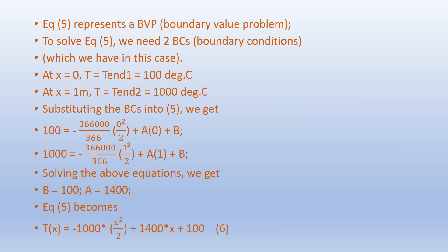This equation represents a boundary value problem. To solve it we need two boundary conditions. At x = 0, T = T₁ = 100°C, and at x = 1 meter, T = T₂ = 1000°C. Substituting the boundary conditions and solving for A and B, the solution becomes: T(x) = -1000·(x²/2) + 1400·x + 100.